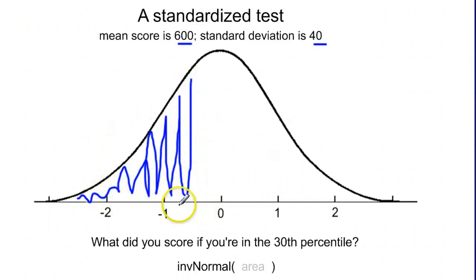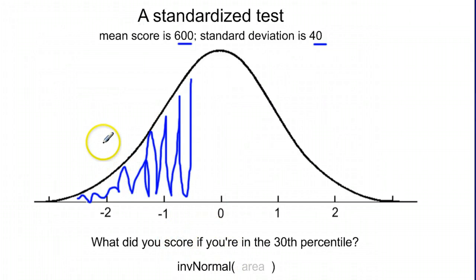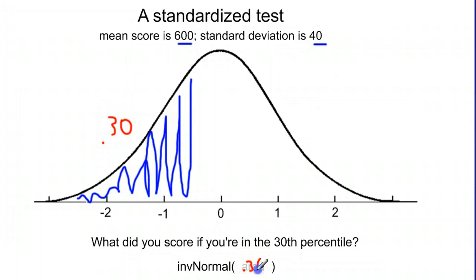The 30th percentile is going to probably be somewhere between 0 and negative 1 standard deviations. All you have to do is figure out what that area is — 30th percentile means an area of 0.30. You type that into the function inverse normal on your calculator.